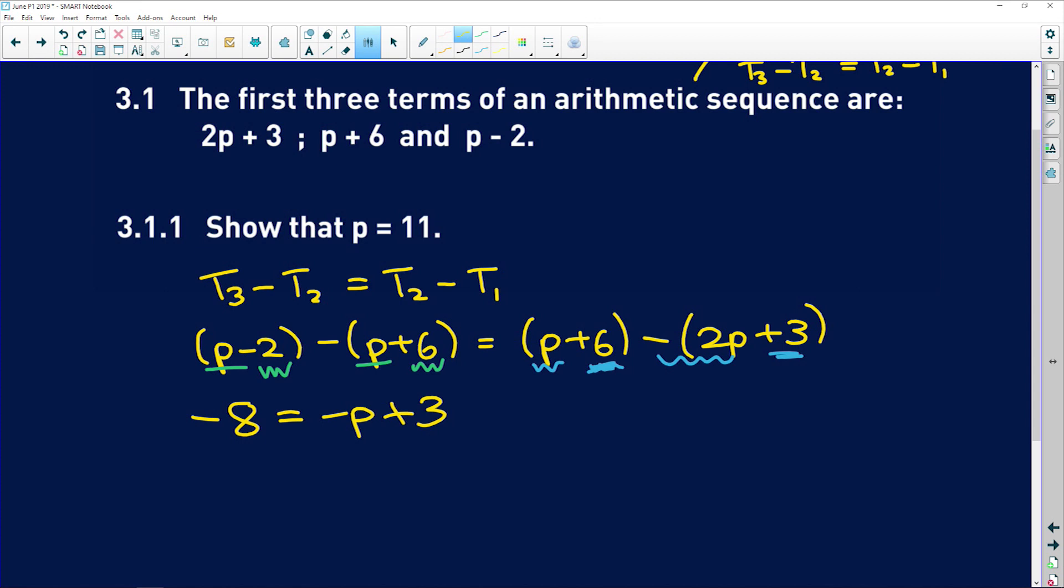Now I'm going to add p to both sides, so I get p is equal to—if I add 8 to both sides—I get 11. Easy peasy.